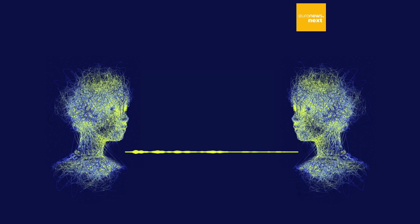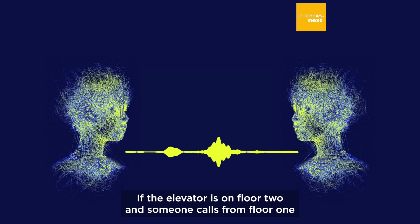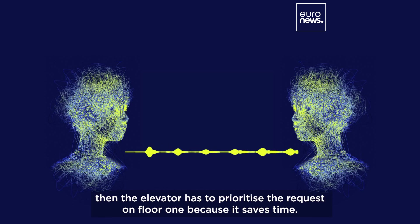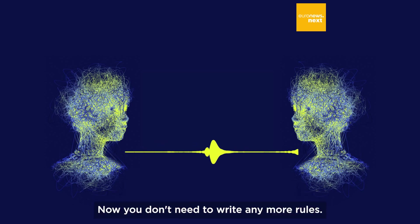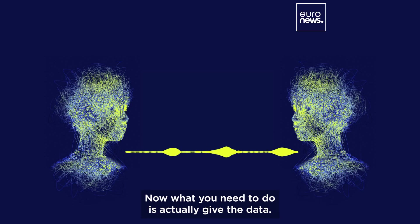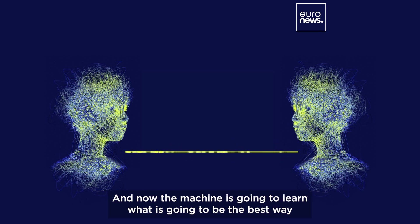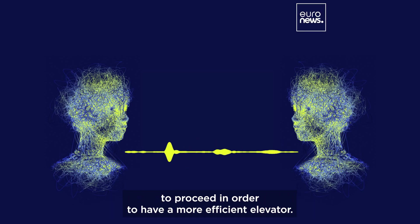If I want to program an elevator, I will need to give rules. Here's a rule: if the elevator is on floor two and someone calls from floor one and another person from floor nine calls for it at the same moment, then the elevator has to prioritize the request on floor one because it saves time. Now you don't need to write any more rules. What you need to do is give the data - how much delay one elevator had on each floor - and now the machine is going to learn what is the best way to proceed in order to have a more efficient elevator.